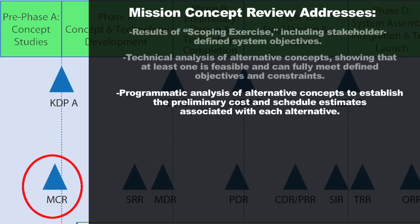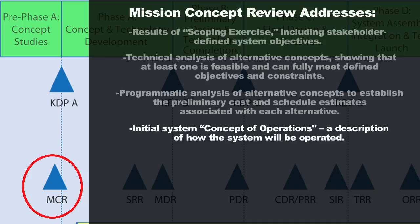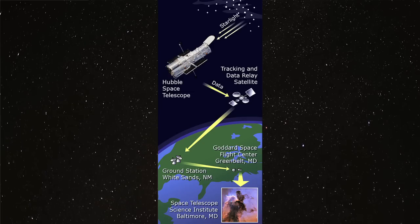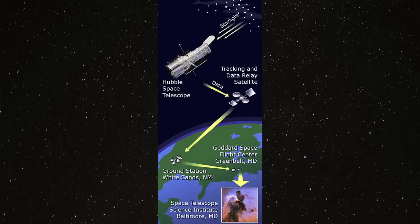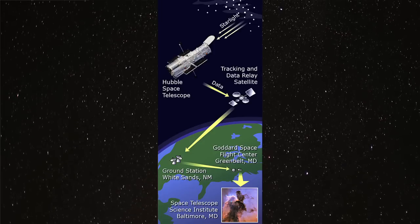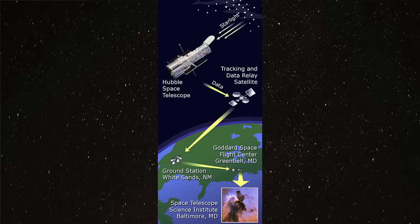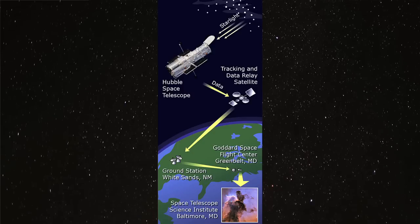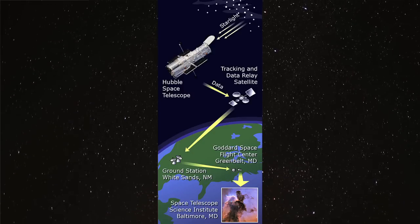This is a technical review team, but they're also asking: do you really have a feasible concept here that, given the amount of money and time you have for this project, technically looks like something that could be done? Technical experts understand how much it typically costs and how long it takes to develop these systems. You're also going to look at the initial concept of operations — think of it as a description of how the system will be operated. It's very important early in the life cycle to lay out a picture of how the system will be operated throughout its life, because that helps define requirements and how you need to build it.